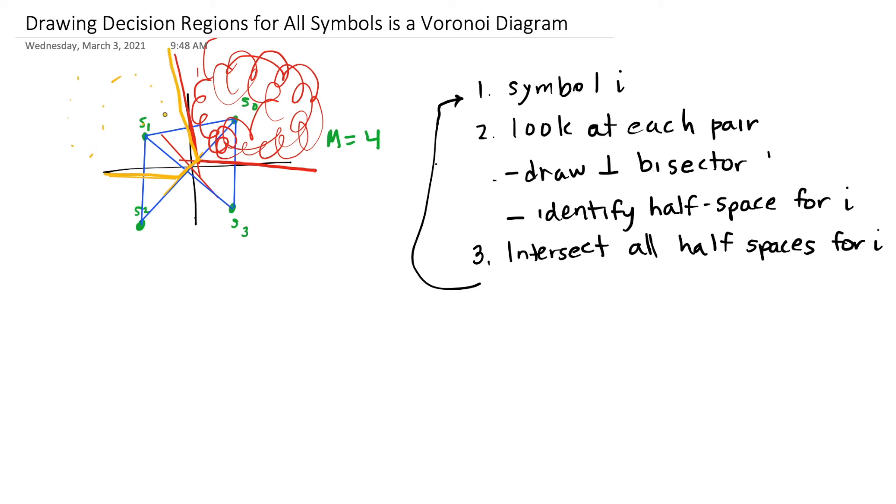Everything on this side of those three lines, the top left of these three lines, is included in the decision region for symbol 1. And it has three lines that contribute to that, the ones that are formed with S2, S3, and S0.